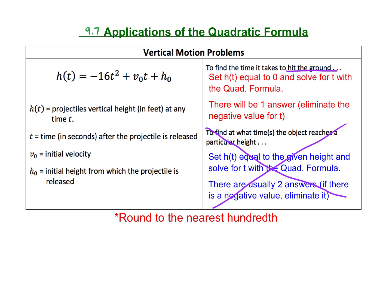For the ground, assume the height is 0. So we're going to set h(t) equal to 0 and solve for t with the quadratic formula. There will be one answer because we'll have to eliminate the negative answer since time can't be negative.